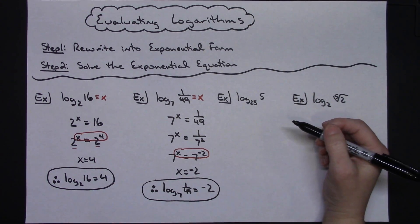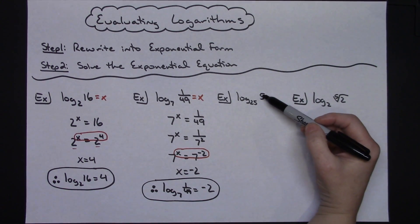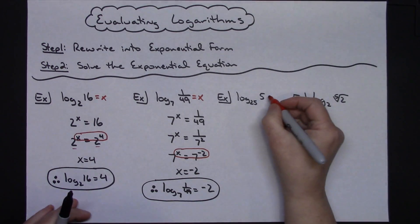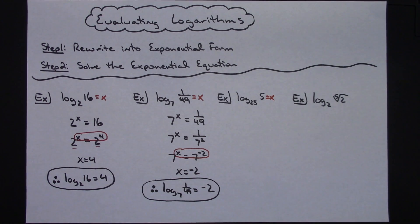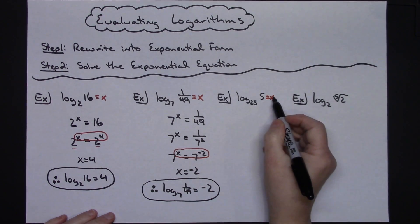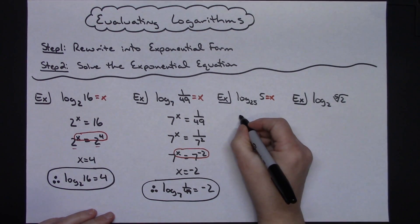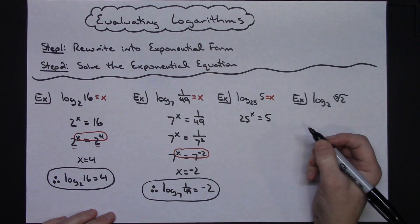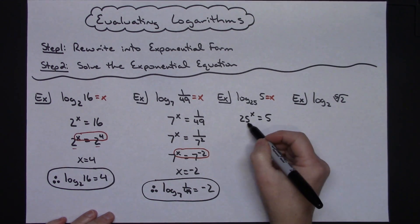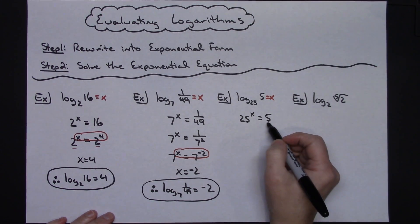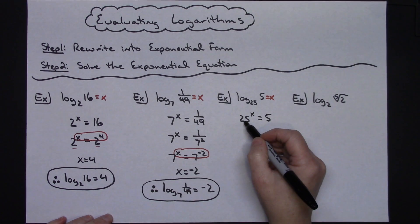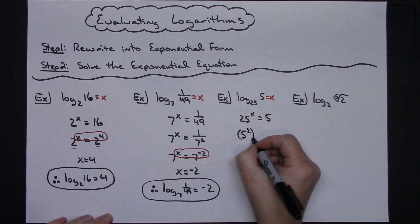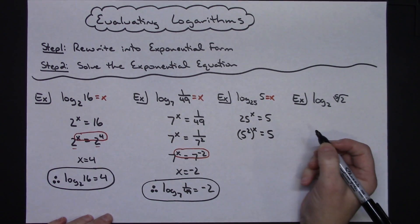In my third example I've got the log of 5 base 25. I'll start by putting "equals x" on there so I can easily see the exponential form. I'll rewrite this as 25 raised to the x equals 5. Now I ask myself: can I rewrite 25 so that I have a base of 5? Yes — that's going to be 5 squared. So 5 squared, raised to the x power, equals 5.